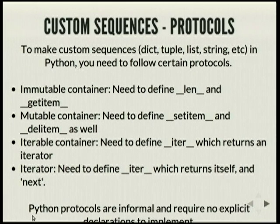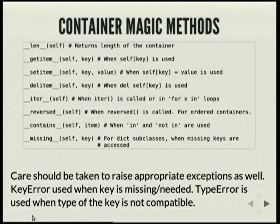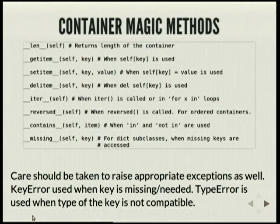Python protocols are quite informal, and there's no explicit declaration for something to be a protocol — it's just a convention. These are the magic methods you can use to create custom containers like strings or types. You should take proper care that you're raising the proper exceptions: KeyError should be used when the key is missing, and TypeError when the key is not compatible with your instance type.